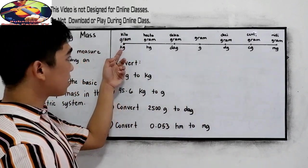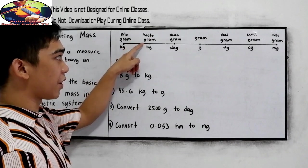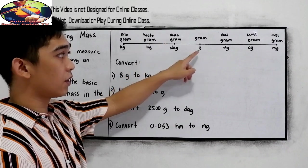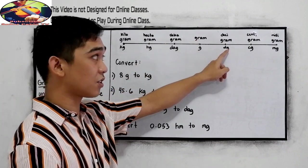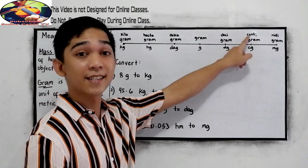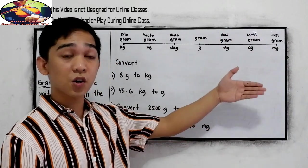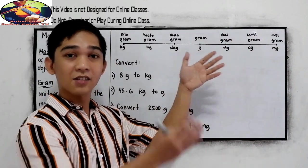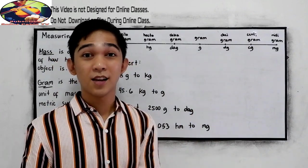Kg stands for kilogram, Hg stands for hectogram, Dag stands for decagram, and G stands for gram. Dg is decigram, Cg is centigram, and Mg is milligram. We will be using this conversion table to easily convert a certain unit to our desired unit.